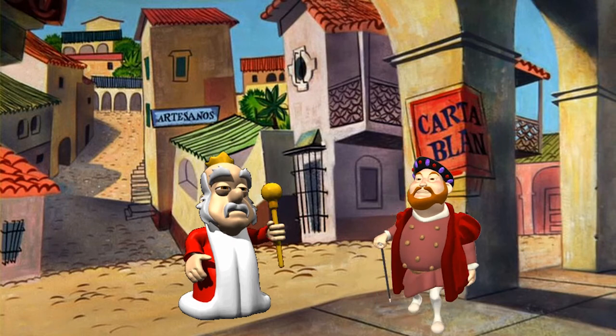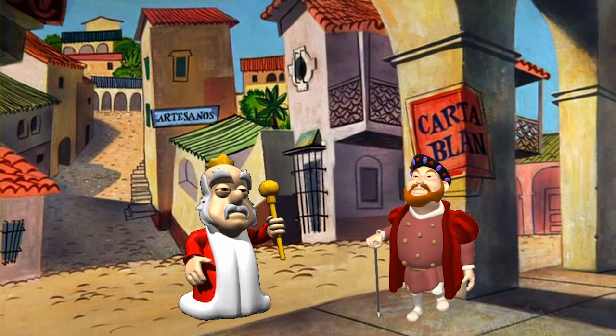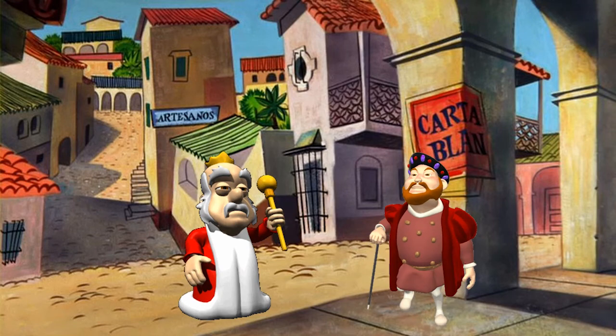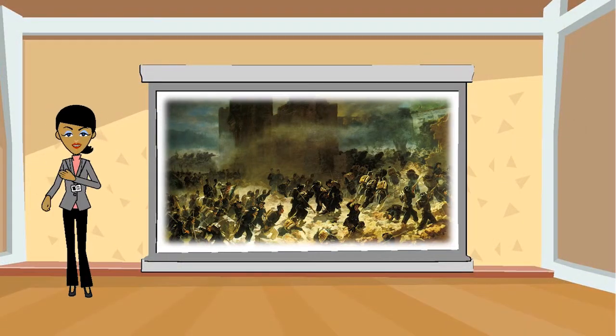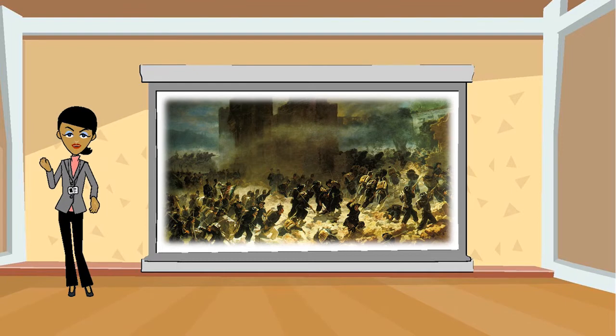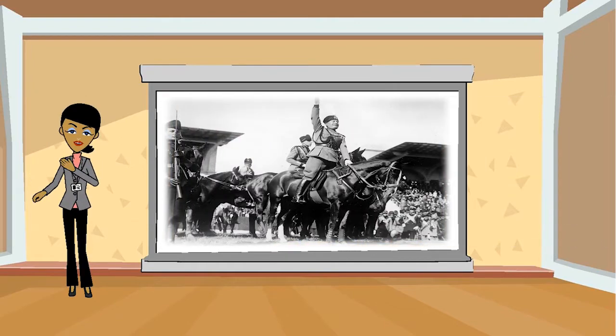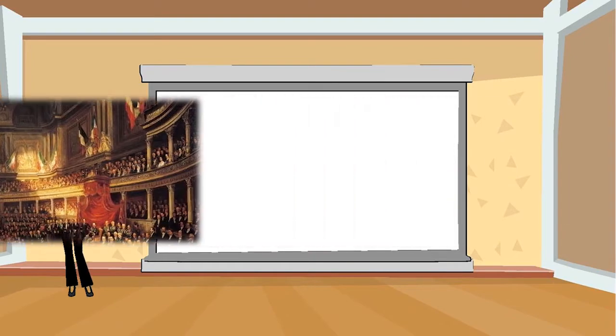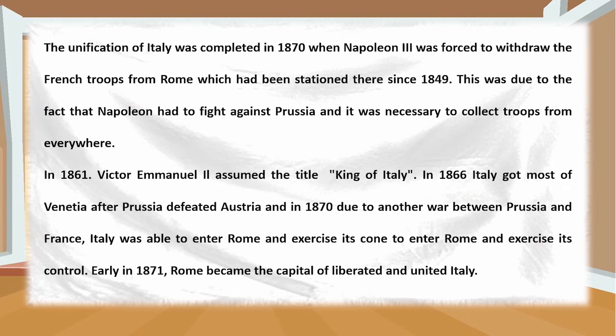The unification of Italy was completed in 1870 when Napoleon III was forced to withdraw the French troops from Rome, which had been stationed there since 1849, as he had to fight against Prussia and needed troops from everywhere. In 1866, Italy gained most of Venetia after Prussia defeated Austria. In 1870, due to another war between Prussia and France, Italy was able to enter Rome. Early in 1871, Rome became the capital of a liberated and united Italy.